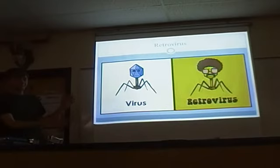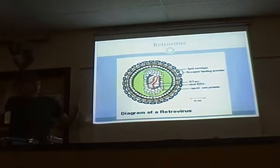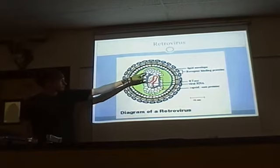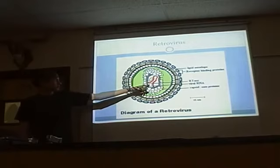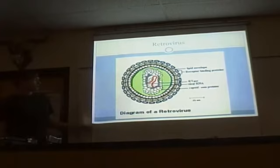This is actually what HIV looks like. It's got the RNA inside the capsid core with the reverse transcriptase enzyme inside it. And around that it has a lipid bilayer to allow it to get into the cell.